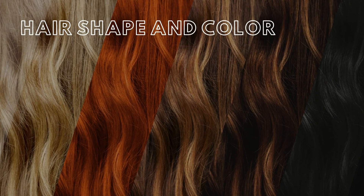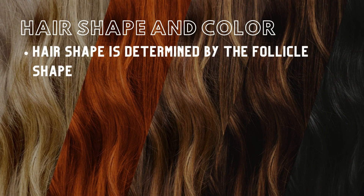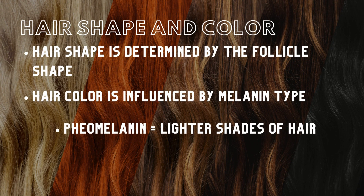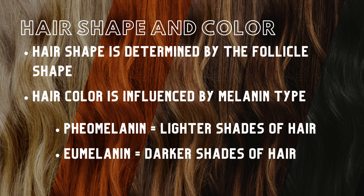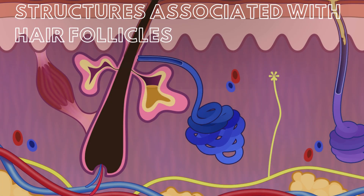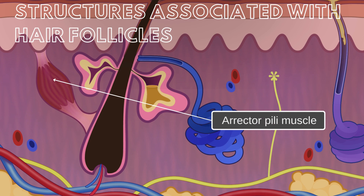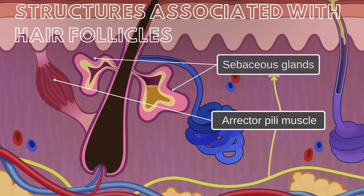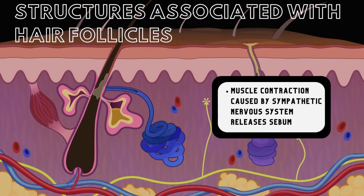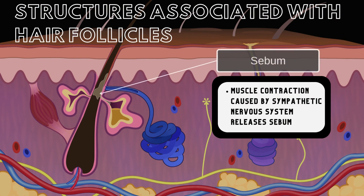Hair shape, whether it is straight or curly, is determined by the follicle shape, while hair color is influenced by melanin types. Pheomelanin produces lighter colors of hair, while eumelanin produces darker colors of hair. Structures associated with hair follicles include the erector pili muscles, which allow the hair to stand on end when stimulated by the sympathetic nervous system. Sebaceous glands release sebum into the hair follicle, lubricating the skin, acting as a bactericide, and keeping the hair soft. Contraction of erector pili muscles and sympathetic nervous system stimulation triggers sebum release into the hair follicle.